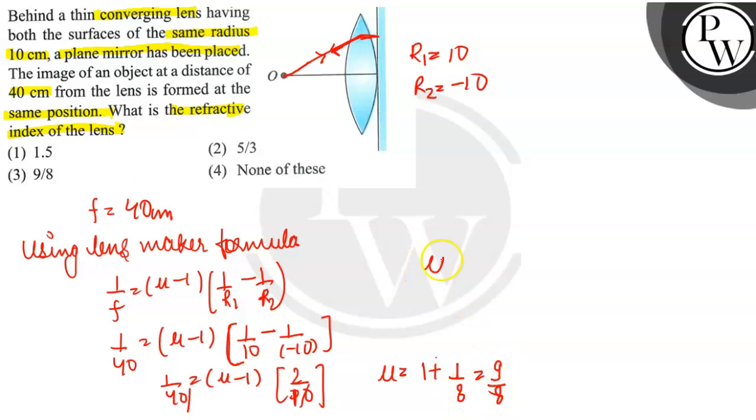Now we have 1/5, so that comes in the numerator and our required answer will be obtained. So which option matches? Option C is correct, nine by eight. I hope the concept is clear. Thank you.